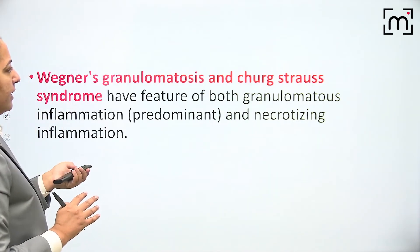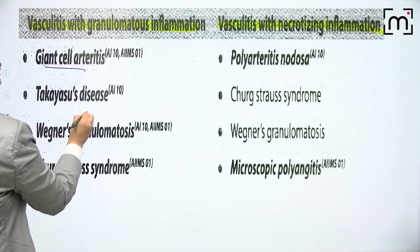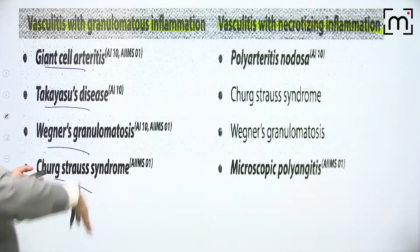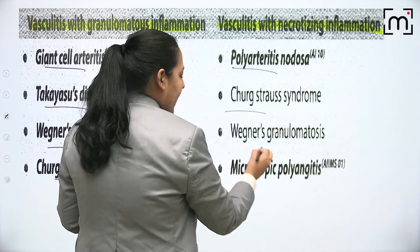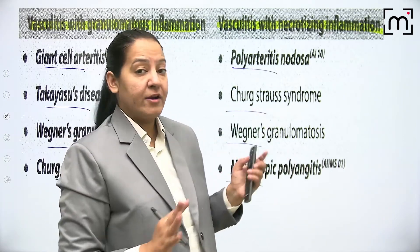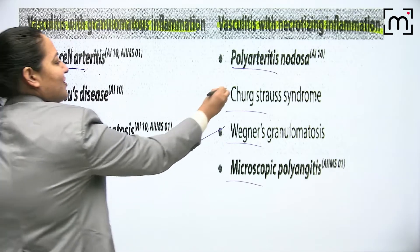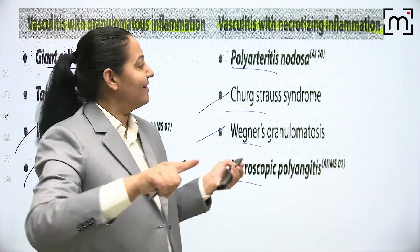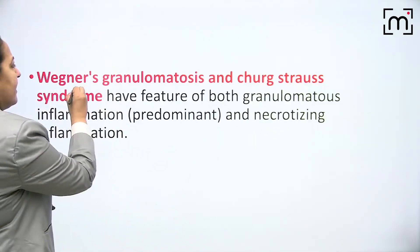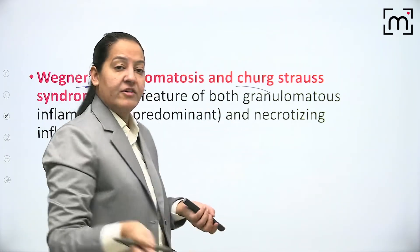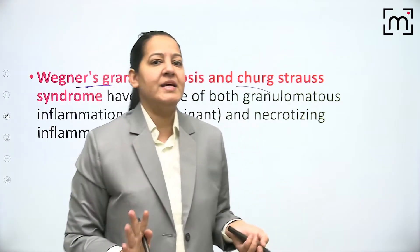Giant cell arteritis, Takayasu, and Wegener's and Churg-Strauss have granulomatous inflammation. PAN, Churg-Strauss, Wegener's, and microscopic PAN have necrotizing inflammation. Very importantly, Wegener's and Churg-Strauss have both types of inflammation - both granulomatous and necrotizing. This is a very important point that is repeated many times in previous year exam papers.